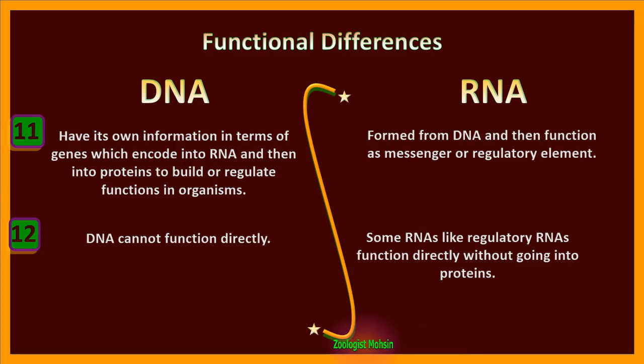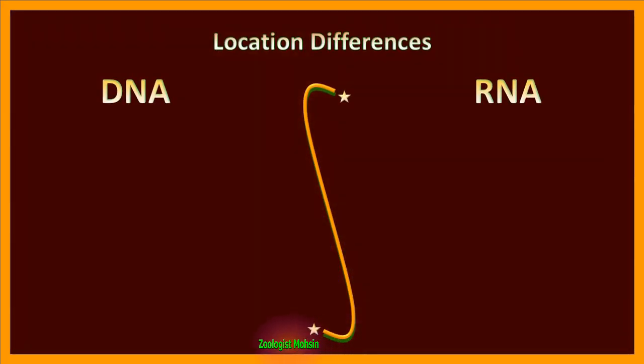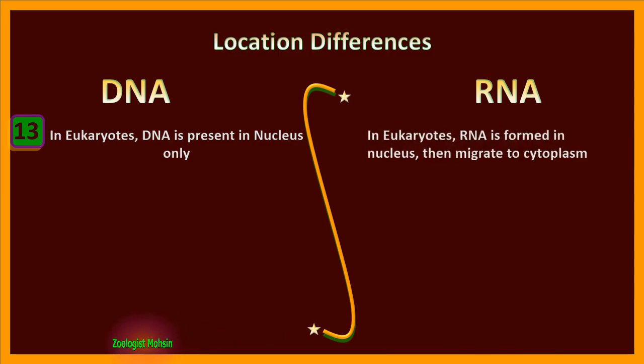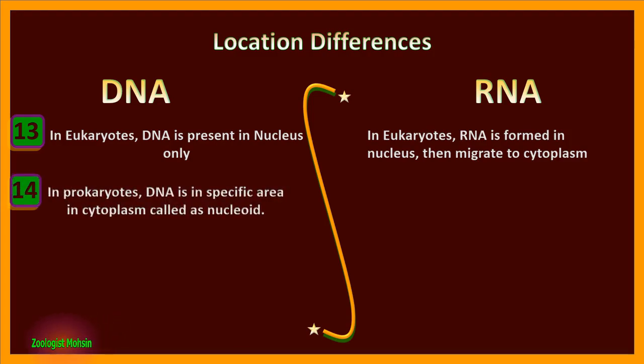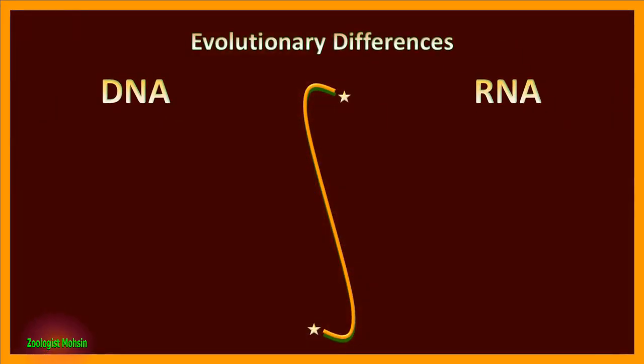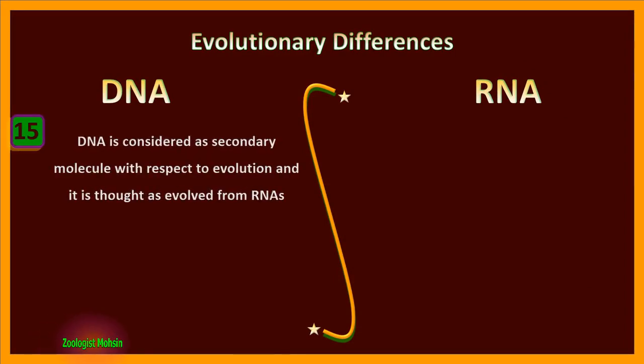Location differences. In eukaryotes, DNA is present in nucleus only. In eukaryotes, RNA is formed in nucleus then migrates to cytoplasm. In prokaryotes, DNA is in a specific area in cytoplasm called nucleoid, while in prokaryotes RNA moves freely in cytoplasm.